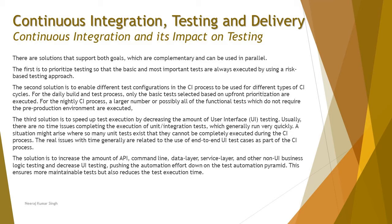For the nightly CI process, a larger number — possibly all — of the functional tests that do not require a pre-production environment are executed. The third solution is to speed up test execution by decreasing the amount of user interface testing, since UI testing requires significant time investment. Unit and integration tests — simple automated tests — generally run very quickly. The real time issue is typically related to end-to-end UI test cases as part of the CI process.